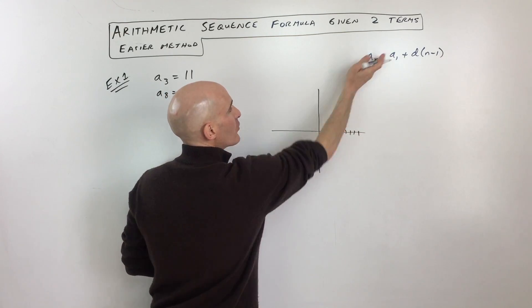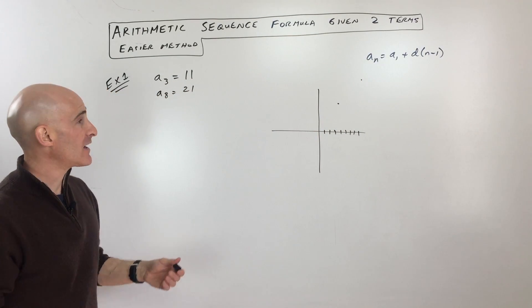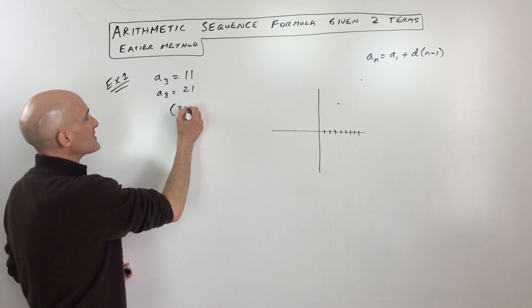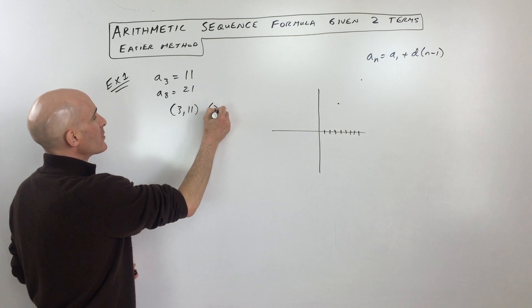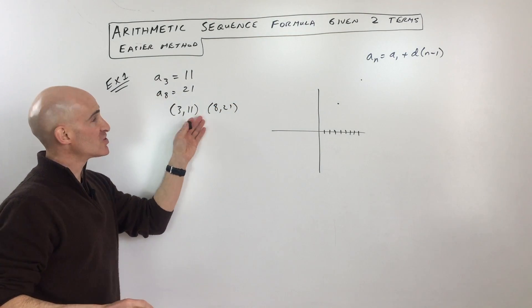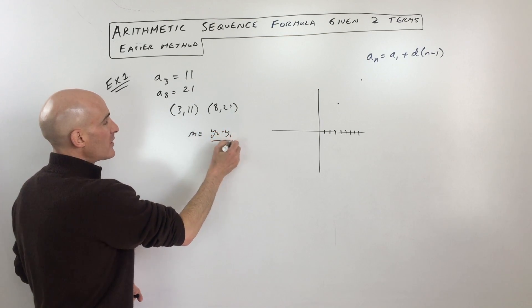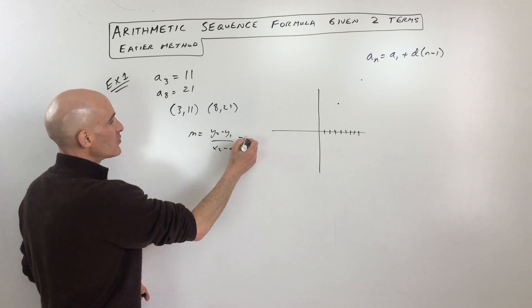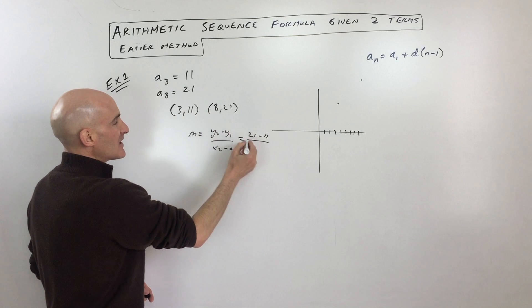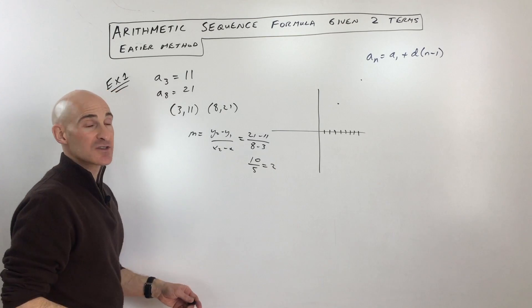That's the slope, so we're going to write the equation of a line using the slope and the y-intercept. We're going to coordinate these points, turn them into coordinates, switching forms from the sequence notation to just coordinate notation. We'll use our slope formula: y2 minus y1 over x2 minus x1, which gives us 21 minus 11 over 8 minus 3, which gives us 10 over 5, which equals 2.